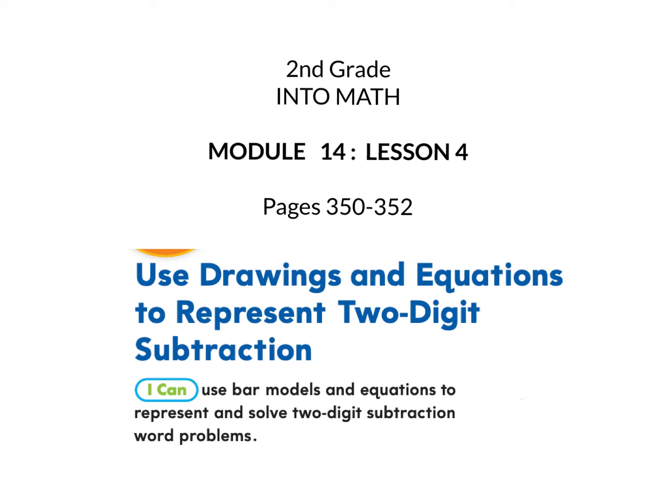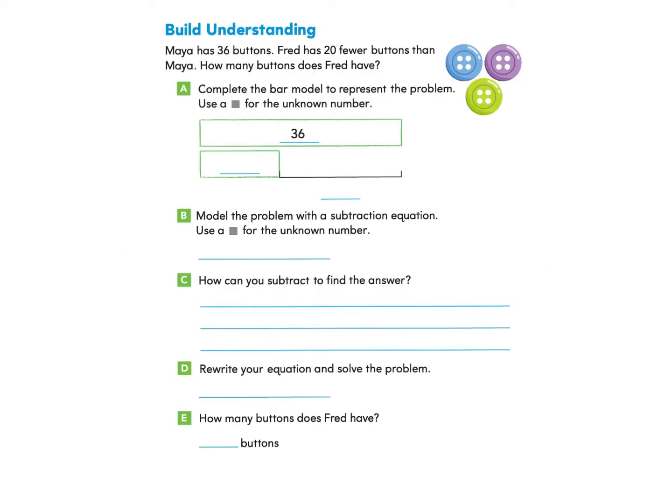This is Into Math 2nd Grade, Module 14, Lesson 4. We are going to start on page 350 and we are going to use drawings and equations to represent two-digit subtraction. The I can statement is: I can use bar models and equations to represent and solve two-digit subtraction word problems. Please gather your workbook and a pencil and turn to page 350.